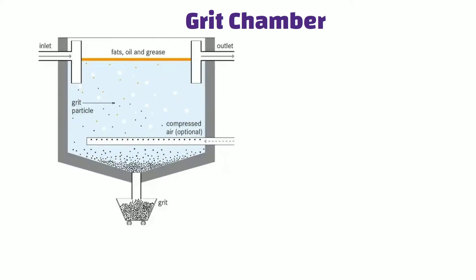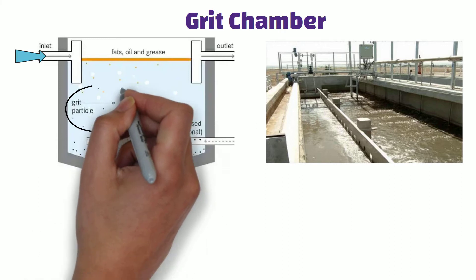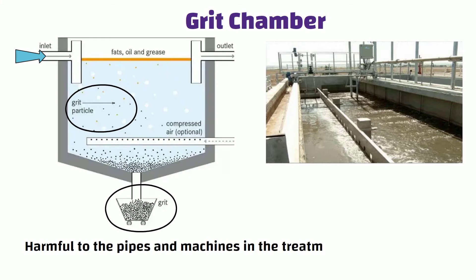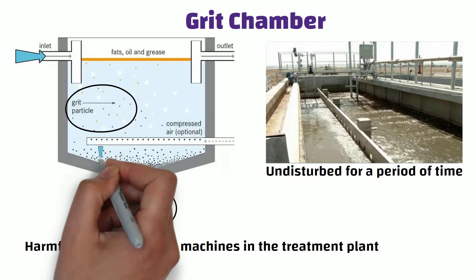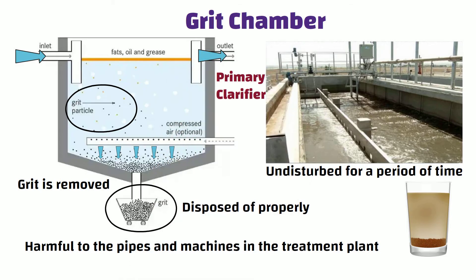Grit Chamber: from the bar screen chamber, the waste water enters the grit chamber through an inlet pipe or channel. This is where small bits of solid material — too small to be removed by the bar screen — are removed. These small bits, called grit, can be harmful to the pipes and machines in the treatment plant if not removed. In the grit chamber, the water is left undisturbed for a period of time, allowing the grit to settle to the bottom of the tank, similar to sand settling in a jar of water. The grit is then removed and disposed of properly, while the water at the top is sent to the primary clarifier for further cleaning.